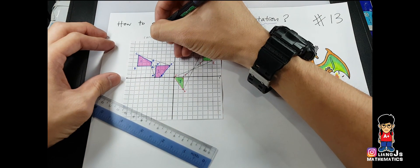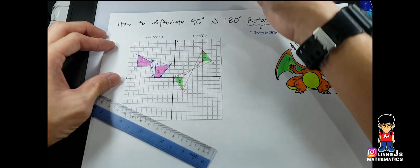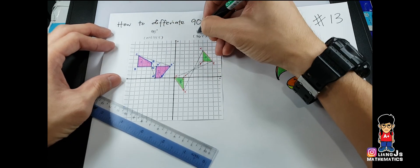So this messy version will be the so-called 90 degree. So that's how to differentiate.